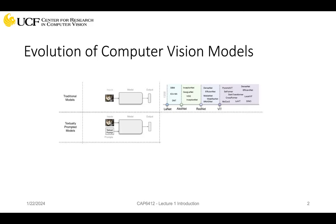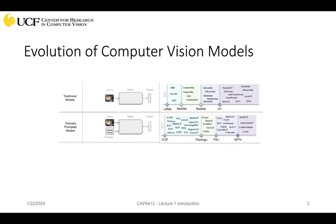Now, with the large language model, we are doing the visual language model. We are doing textually prompted models — we have an image, but at the same time, we have some textual prompt. That is the main difference, and that's what we are going to focus on. For this, there are several different classes of models: CLIP, which we discuss in detail, and there are many versions of CLIP, then Flamingo, Poly, GPT-4, and so on. I'm going to go through several of those quickly.